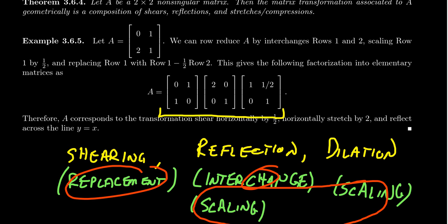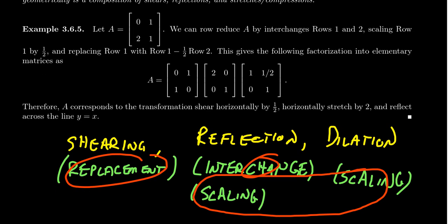And so you can see that by putting this matrix into echelon form, we found a factorization into elementary matrices. This was our interchange matrix, this was our scaling matrix, and this is a replacement, a backwards replacement matrix, upper unit triangular matrix. So this is a factorization into elementary matrices of A.